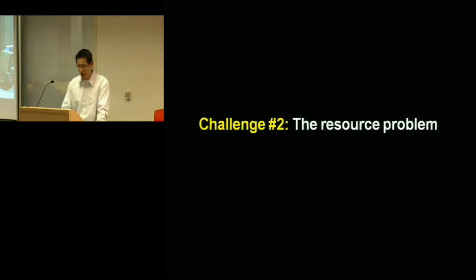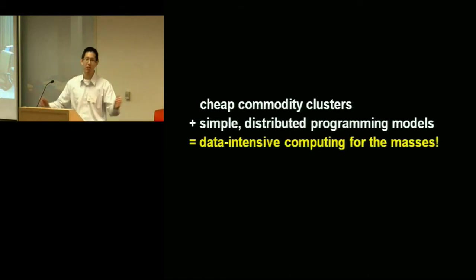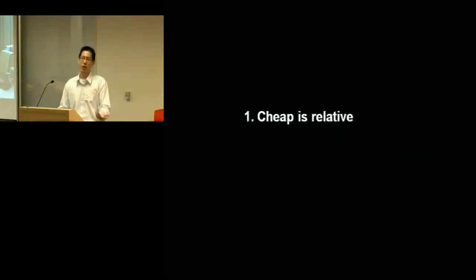So I'm going to move on and talk about the second problem, the resource problem. So it's been said that with cheap commodity clusters and simple distributed programming models like MapReduce, you add them together and you have data intensive computing for the masses. So you should ask me, well, what's the problem here? Well, there's still several problems. One of them is that cheap is relative. So we've lowered the bar a little bit, instead of hundreds of thousands of dollars to play in this game, you now only need tens of thousands of dollars. So you know, these numbers are really rough, but you get the idea. You still, you've lowered the bar, but I still don't think it's low enough. So that's issue number one.